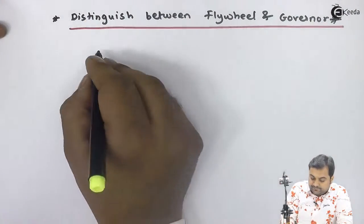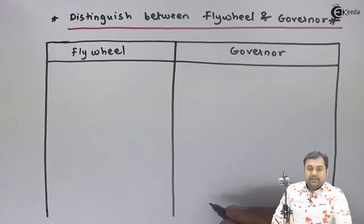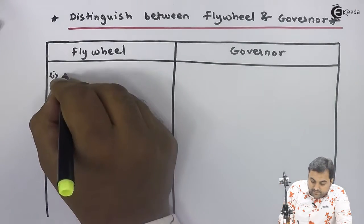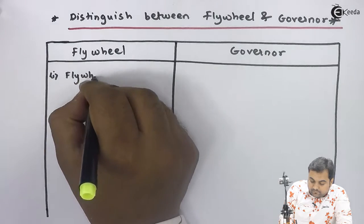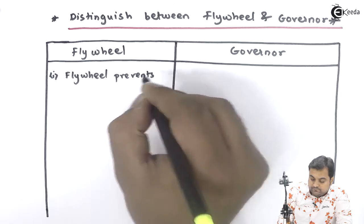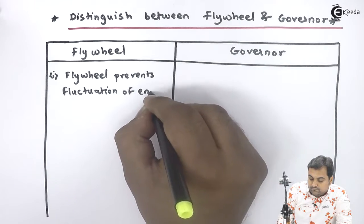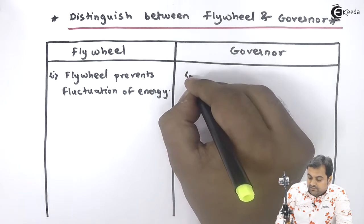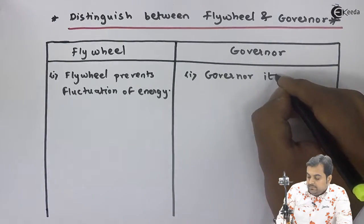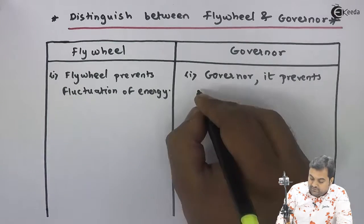Distinguish between flywheel and governor. I will be writing some distinguishing points between flywheel and governor. First, flywheel prevents fluctuation of energy, whereas governor prevents fluctuation of speed.